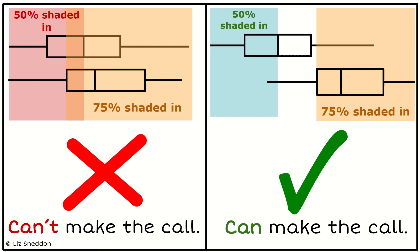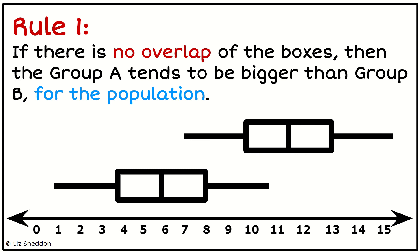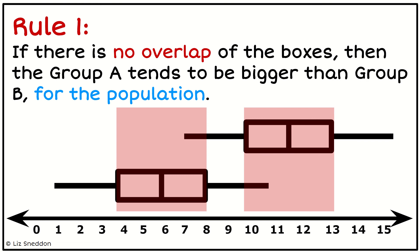This gives us two specific rules. Rule number one says: if there is absolutely no overlap of the boxes, then group A tends to be bigger than group B for the population. Remember we're making an inference about the population. If the box of the bottom group and the box of the top group don't overlap, I can make the claim that group A tends to be bigger than group B for my population.